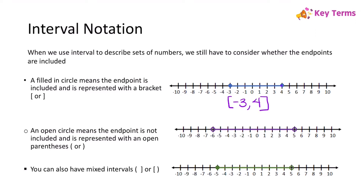Notice that when we're using interval notation, we don't actually specify the variable that we're talking about. If we have an open circle, that means the endpoint is not included, so we're going to use open parentheses. For this number line, we would write negative 6, and then that goes to 5, and then we do another open parenthesis there.